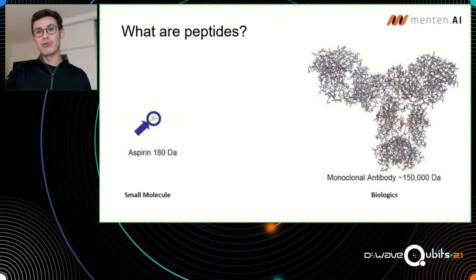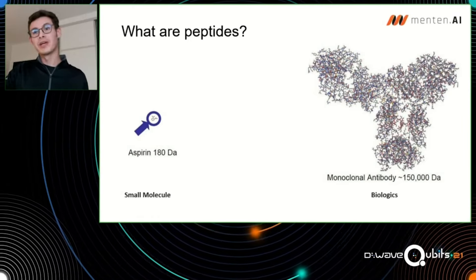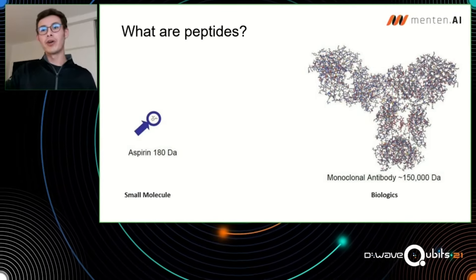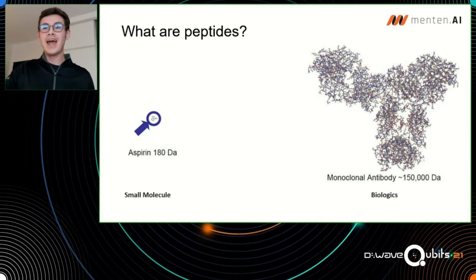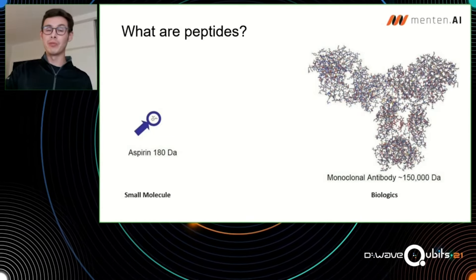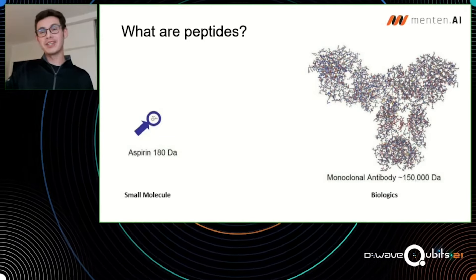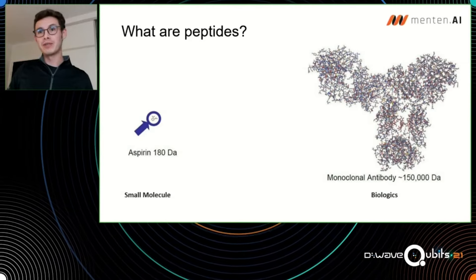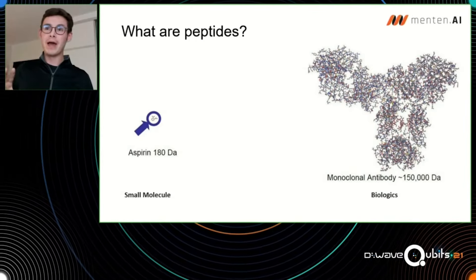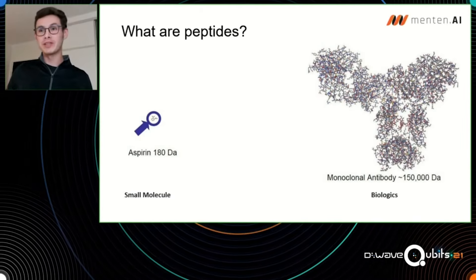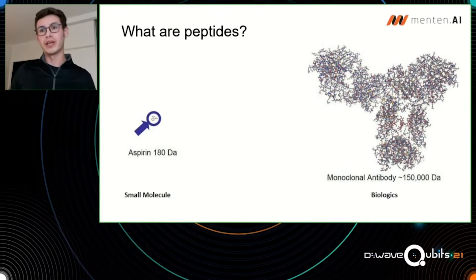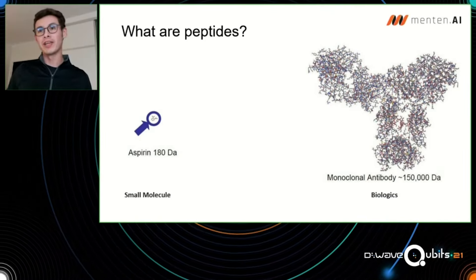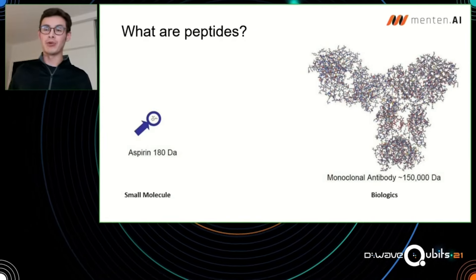In fact, over 99% of small molecules fail during trials before they get to be a drug. On the other hand, biologics have a number of advantages over small molecules. They are much, much larger in size, and with that, they have the ability to target new proteins with a larger, more complex surface area. But of course, being so large makes it really hard, if not impossible, to penetrate tissues and to go into cells.